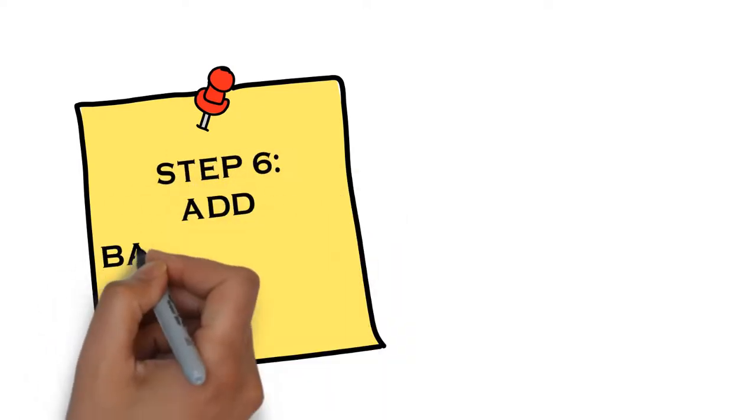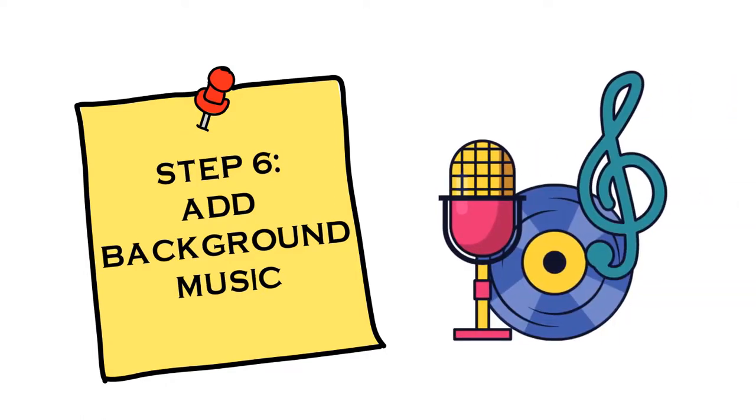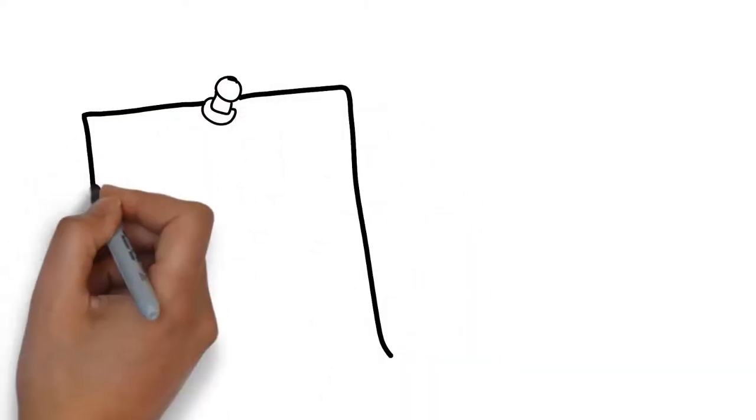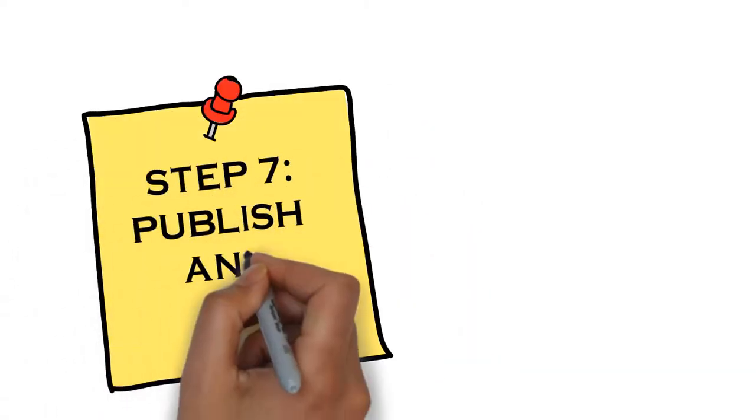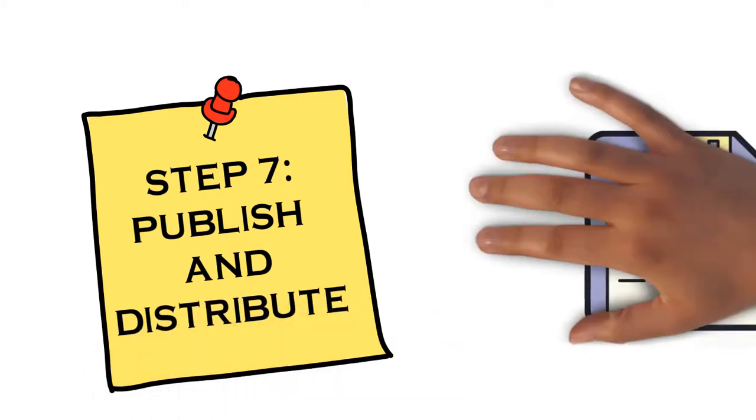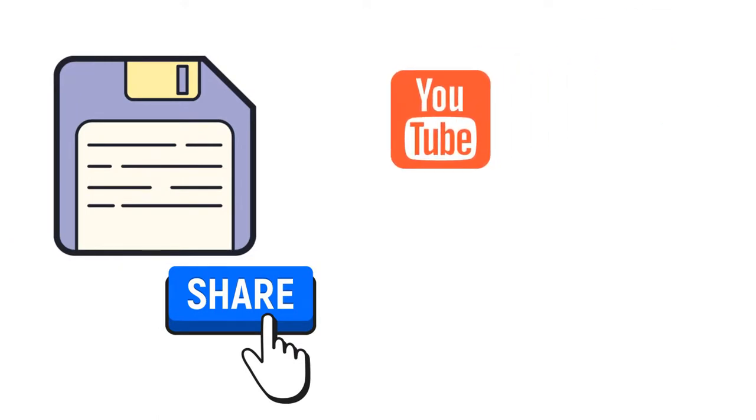Now step six of this framework is to include a background music, which is optional. This depends on the type of project you are working on. And the last step of this framework is to publish and distribute your whiteboard animation to various platforms like YouTube, Facebook, WhatsApp, etc.